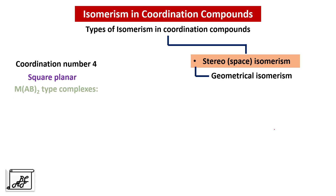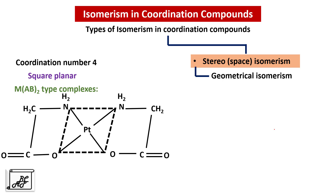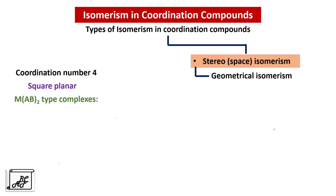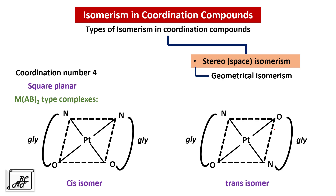Now let us take an example involving a bidentate ligand — the MAB2 type, where AB stands for a bidentate ligand. Taking glycine as the bidentate ligand: when the two oxygen atoms of the two glycine molecules are on the same side, this isomer is called cis. When the two oxygen atoms are on the opposite side, this is the trans isomer. For simplicity, we can write EN for the bidentate ligand and note the end atoms nitrogen and oxygen: two oxygens on the same side is cis; two oxygens or two nitrogens on the opposite side is trans.